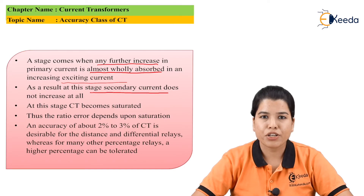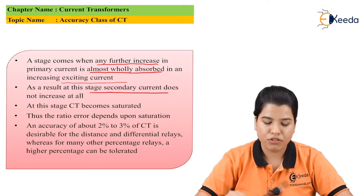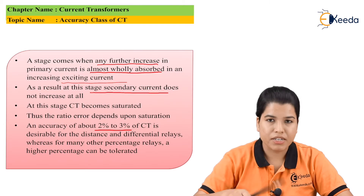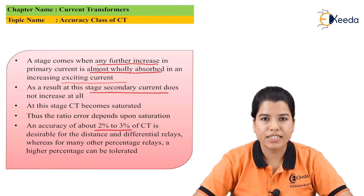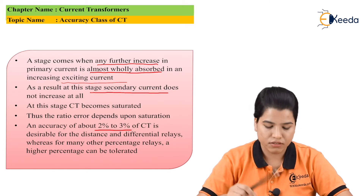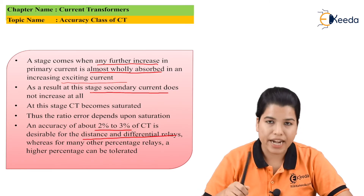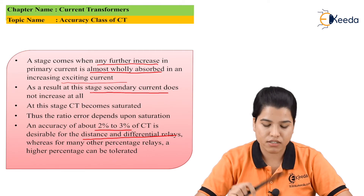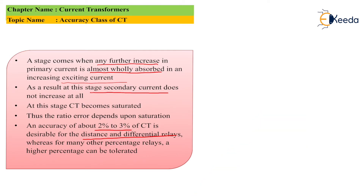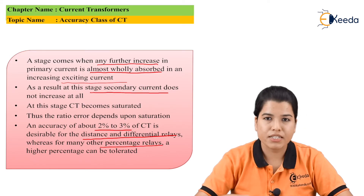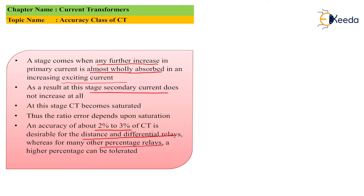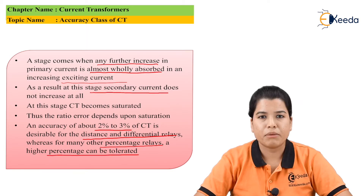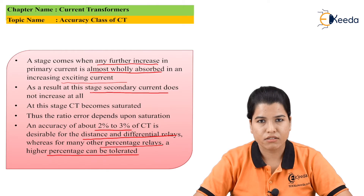An accuracy of about 2% to 3% of CT is desirable for distance and differential relays, whereas other percentages may be tolerated for other relays.